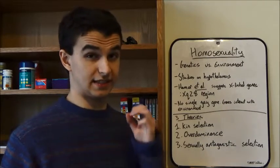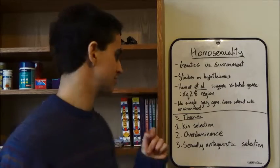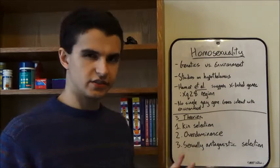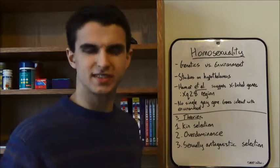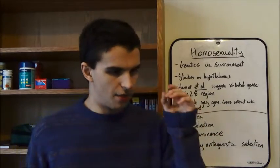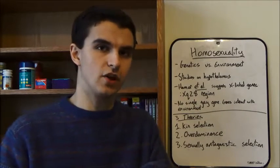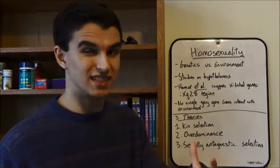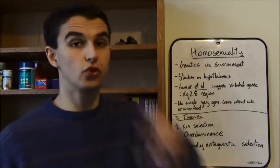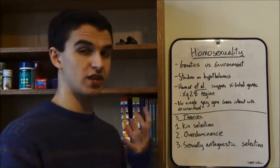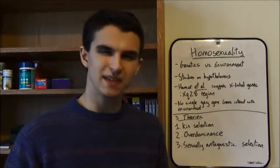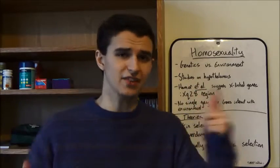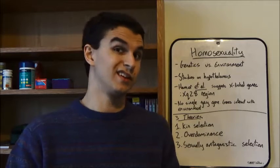We're now moving on to why homosexuality exists. There are three main theories. The first one is kin selection. Most of the studies, by the way, have been done on homosexual men. The theory is that homosexual men may help the family raise other kin instead of reproducing themselves. Because by improving the fitness of your relatives, you're indirectly increasing the chances of your genes — because you're related, so you've got similar genes — being passed on to future generations. So basically acting like a kind of nanny.